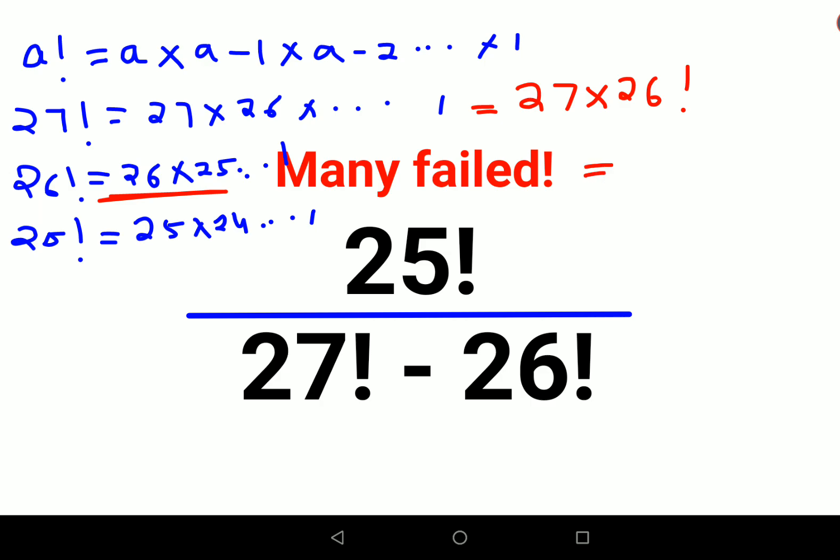Similarly, 26 factorial can also be written as 26 × 25 factorial. Using the same logic, I will take 25 factorial as it is, and in the denominator I will write 27 into 26 factorial minus 26 factorial.